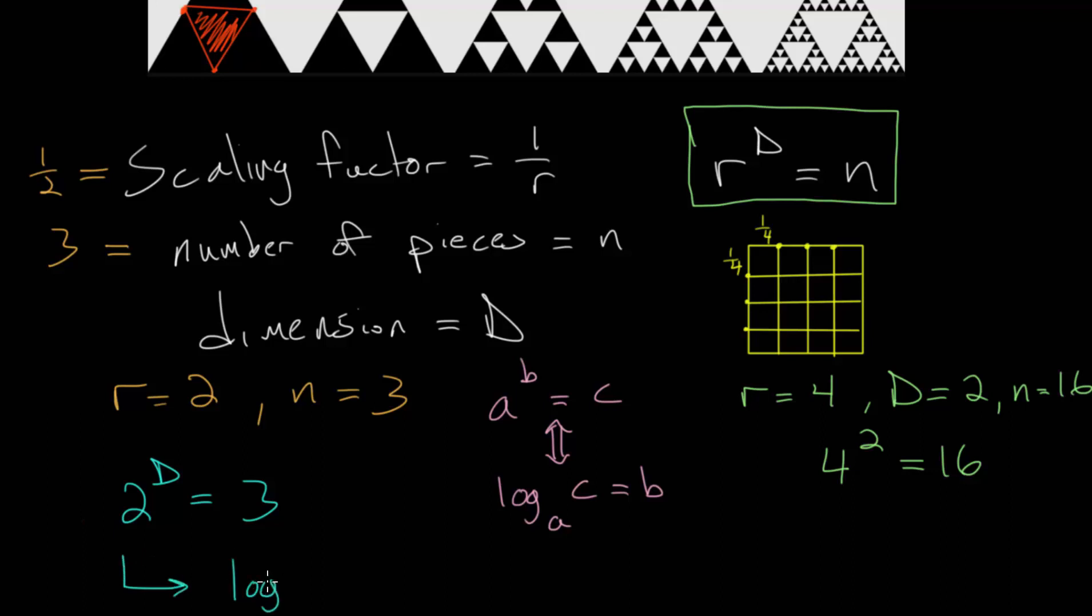we can rewrite our exponential equation. It would have the same base of 2, so log base 2. 3 would go as the input of the logarithm since it's what the exponential equation is equal to. And logarithms are always equal to the exponent since logarithms are exponents. Meaning that our dimension is simply log base 2 of 3.